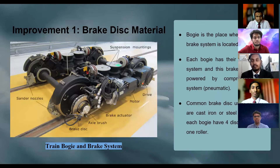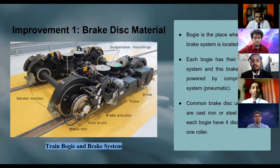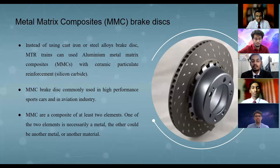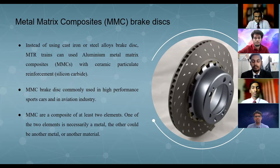The first improvement we are planning to make is changing the brake disk material. Currently, brake disks used in MRT projects are made from cast iron or steel alloys. The material we are suggesting to use in future MRT projects is MMC, Aluminium Metal Ceramic Composite with Ceramic Particle Reinforcement, Silicon Carbide. This type of brake disk is commonly used in sports cars and aviation industries.